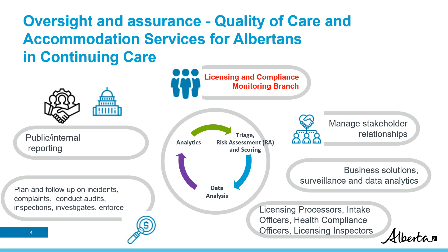Within the licensing and compliance monitoring branch, there are a variety of staff dedicated to providing oversight and assurance services to Albertans. The branch primarily focuses on ensuring quality of care and accommodation services for Albertans in continuing care, which includes the licensing office, inspections health compliance, and business supports including public reporting. Licensing and compliance monitoring staff endeavor to manage stakeholder relationships, support business solutions, surveillance and data analytics, provide timely and effective responses to incidents, complaints, inspections, investigations, and enforcement measures, and support accountability to the public via public and internal reporting.